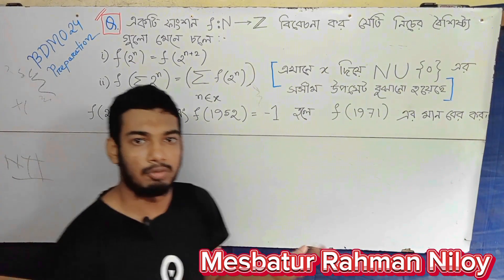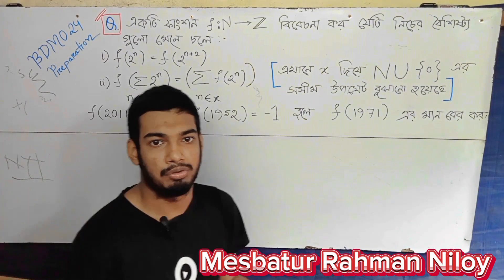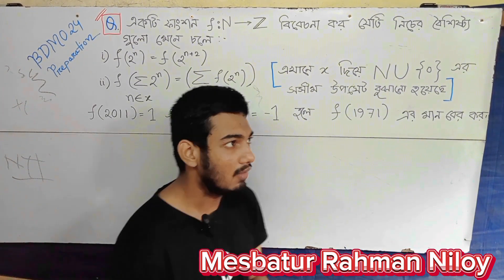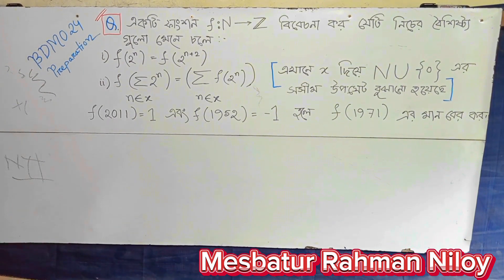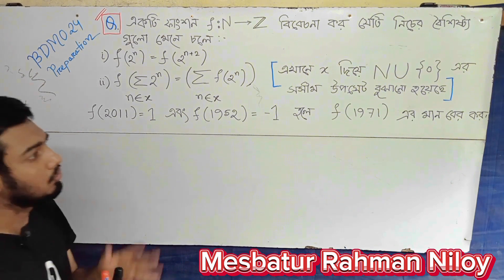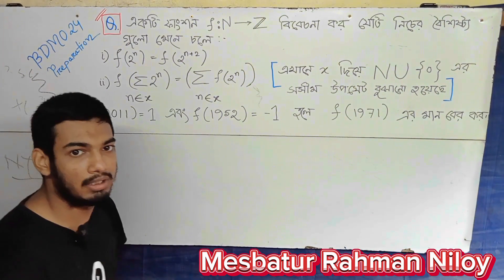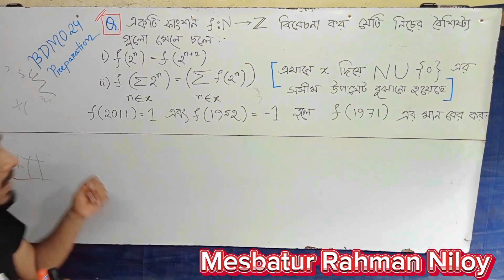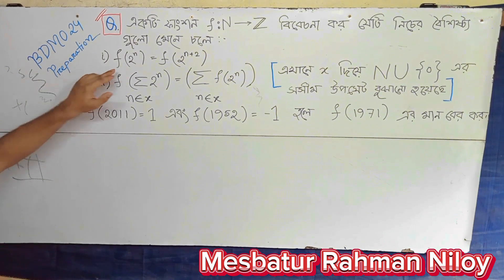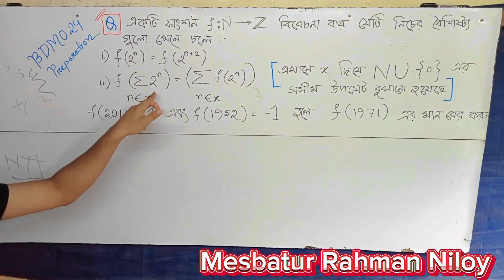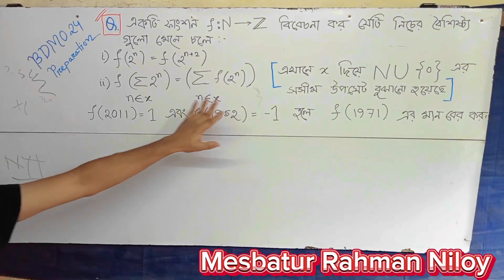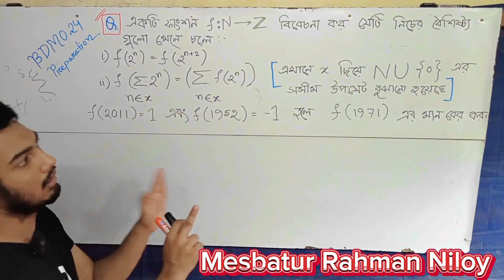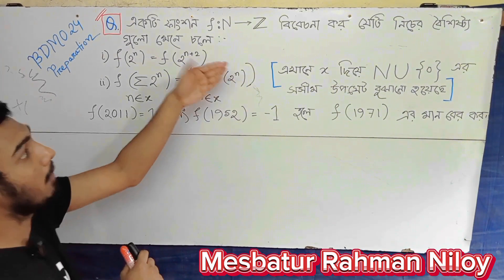So we will try this problem. We will try this solution. The solution is equal to 2 to the power. The first solution is equal to 2r power.